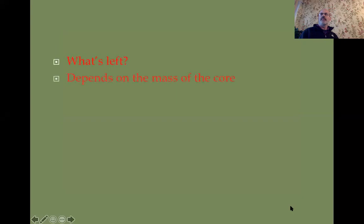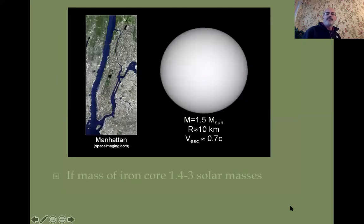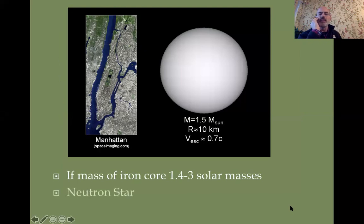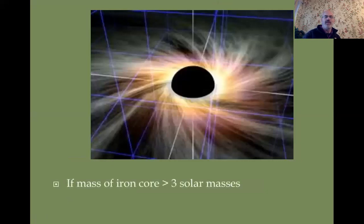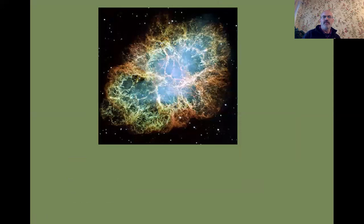What's left after the explosion depends on the mass of the star. If the remaining core mass is between about 1.4 and 3 solar masses, you get a neutron star — roughly the size of New York City, about 10 kilometers in radius, but one and a half times the mass of the Sun. The escape velocity at its surface would be about 0.7 times the speed of light. If the iron core mass is greater than 3 solar masses, even neutron degeneracy pressure can't stop the collapse, and you get a black hole.